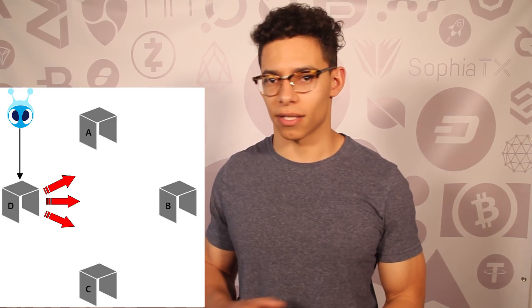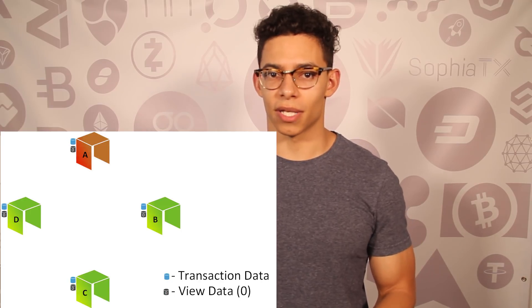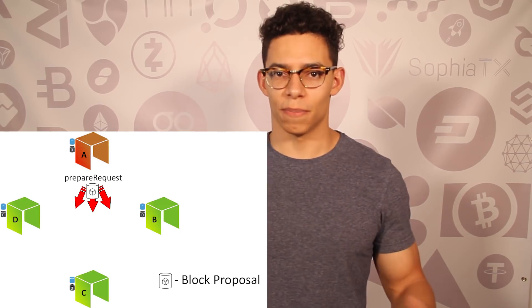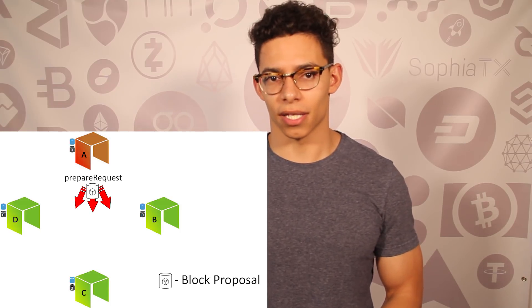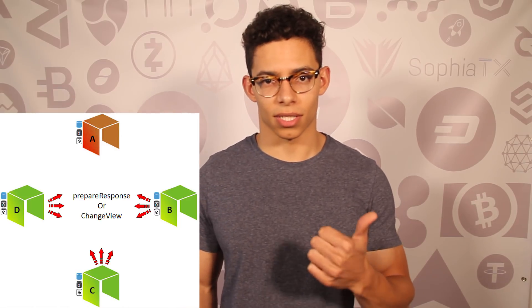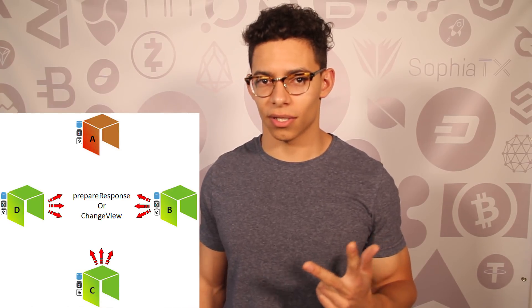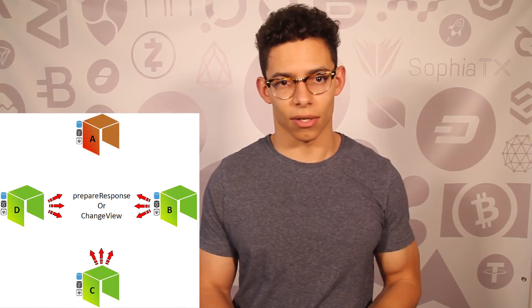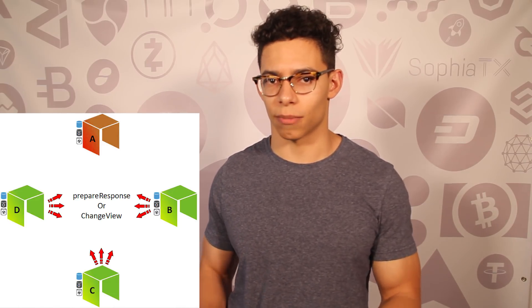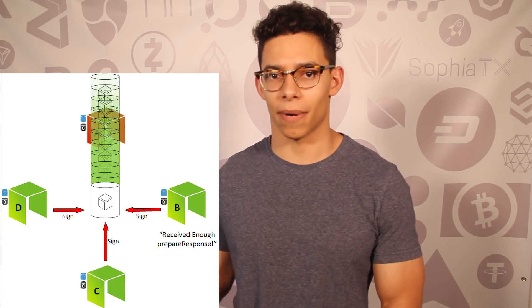Let's break it down further. A consensus node broadcasts a transaction to the entire network with the sender's signatures. A speaker is identified by the protocol and the view is set. The speaker then mints a new block proposal for review by the delegates. The delegates receive the proposal and validate the following criteria: Is the data format consistent with system rules? Is the transaction already on the blockchain? Are the contract scripts correctly executed? And does the transaction avoid a double-spend scenario? If something looks off, the delegates change view and the block's progression stops. If everything checks out, consensus is reached and the approving delegates sign the block, binding it to the chain.